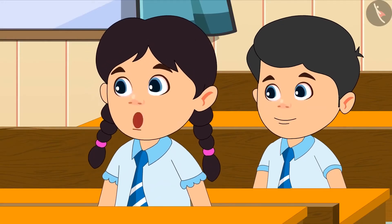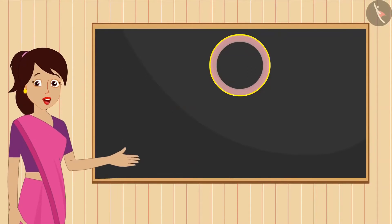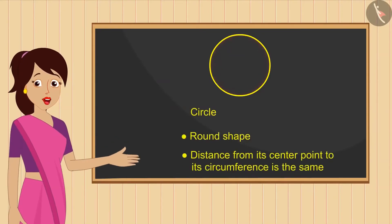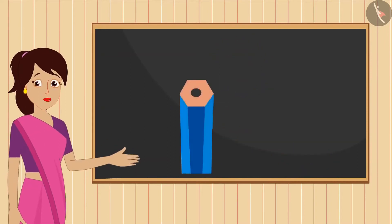Now tell me that if we trace this bangle on a paper, then which shape shall we get? This is a circle, absolutely right, because this is a round shape in which the distance from the center point to its circumference is the same, so it's a circle.